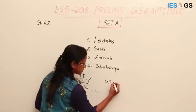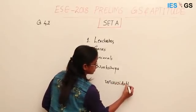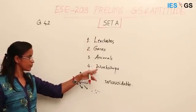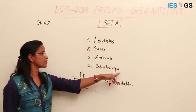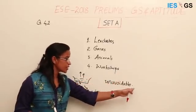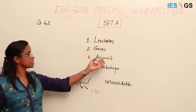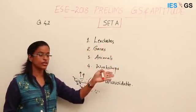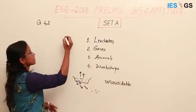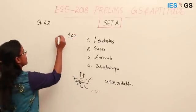The question specifically asks about unavoidable factors. All four can occur in a landfill, but the unavoidable ones are leachate and gases, because animals and rodents can be controlled, and automobile workshops can also be controlled. So the answer is 1 and 2, which is option D.